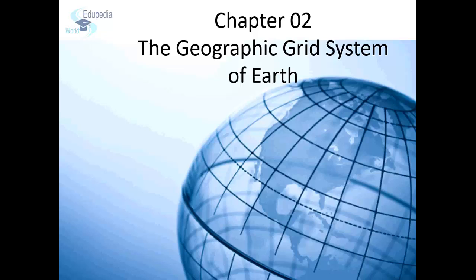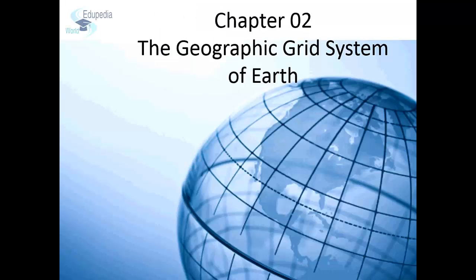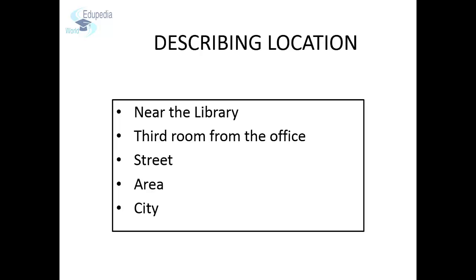you need some point of reference. For example, right now you are probably sitting in one of the rooms in your house or school watching this video on your tablet or computer. In order to describe your location to your friend, you can state what is around you — for example, near the library, third room from the office.